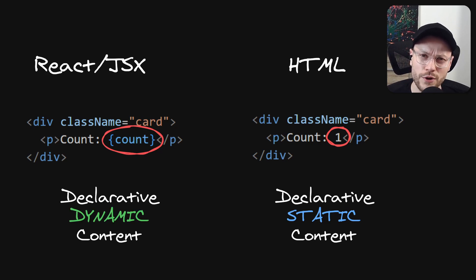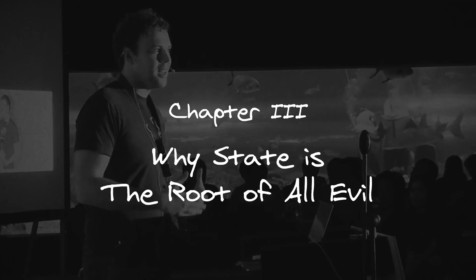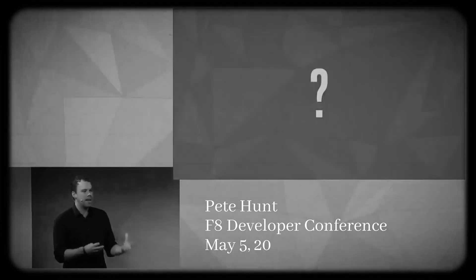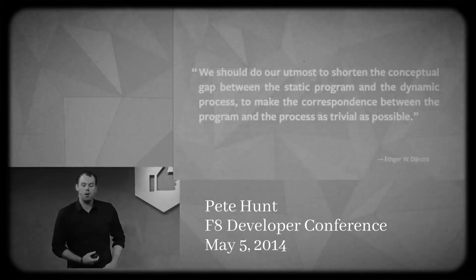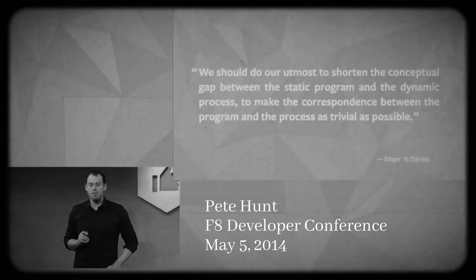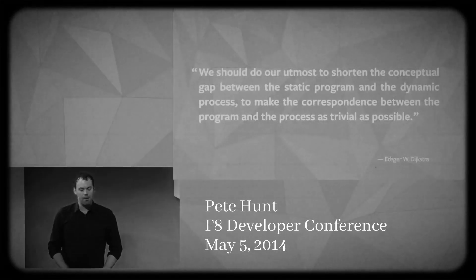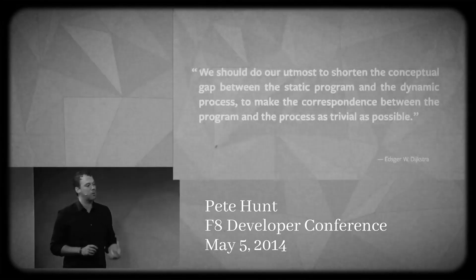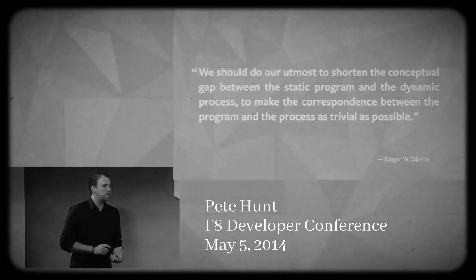And why is that important? Because processes that are spread out over time are very difficult for humans to understand and hold in their head — just these imperative actions that mutate state. It's very difficult to figure out what that state is at the end of a sequence of mutations. Dijkstra has a really great quote about this: we should do our utmost to shorten the conceptual gap between the static program and the dynamic process, so that to make the correspondence between the program and the process as trivial as possible.